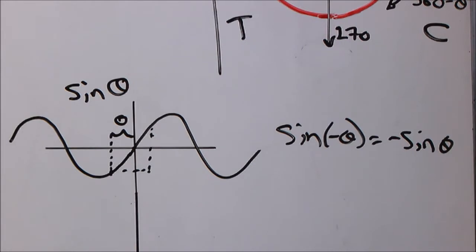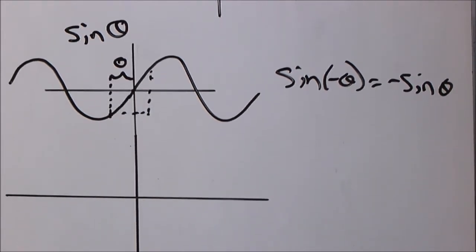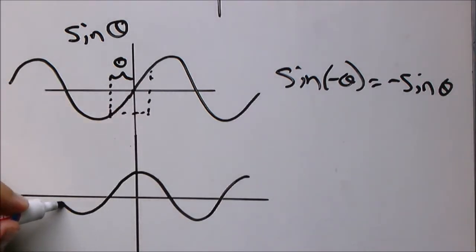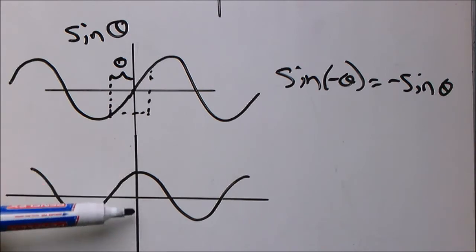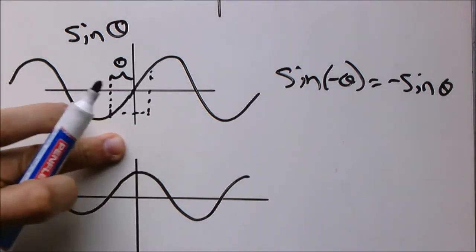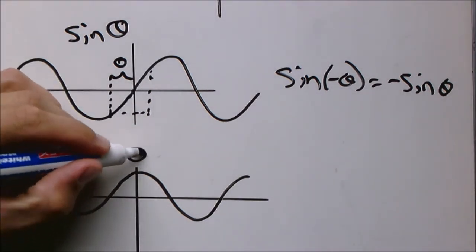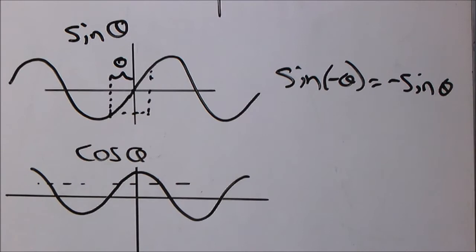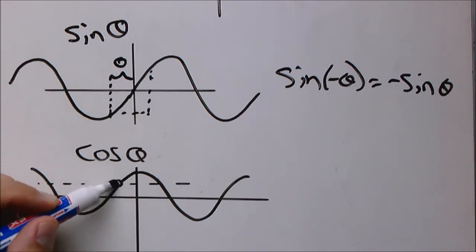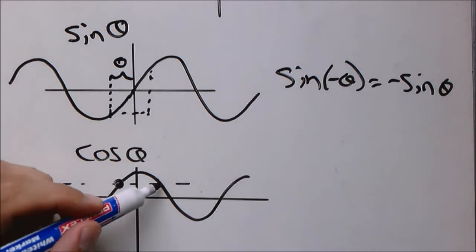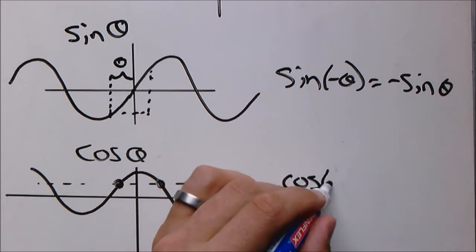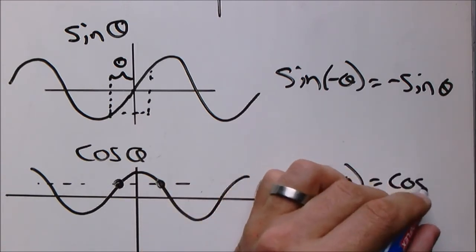Now we will look at the cos graph. It's a mirror image around the y axis. So a cos graph is symmetrical. Whatever the value on one side, let's say for cos negative theta, it will be the exact same value on the other side. In other words, cos negative theta is the same as cos theta.